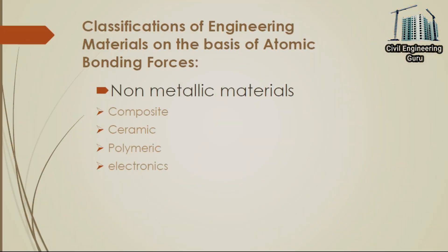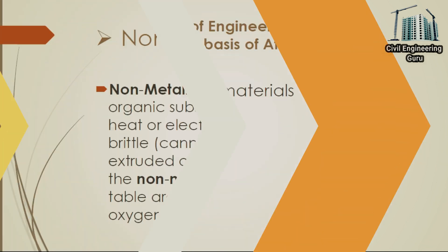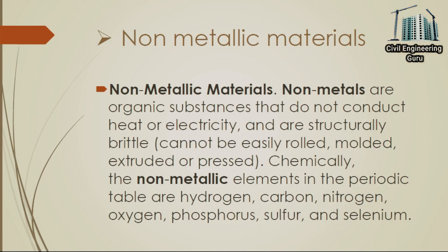Now moving toward non-metallic materials — composite, ceramic, polymeric, and electronics. Non-metallic materials are organic substances that do not conduct heat or electricity and are structurally brittle; they cannot be easily rolled, molded, extruded, or pressed. Chemically, the non-metallic elements in the periodic table are hydrogen, carbon, nitrogen, oxygen, phosphorus, sulfur, and selenium.